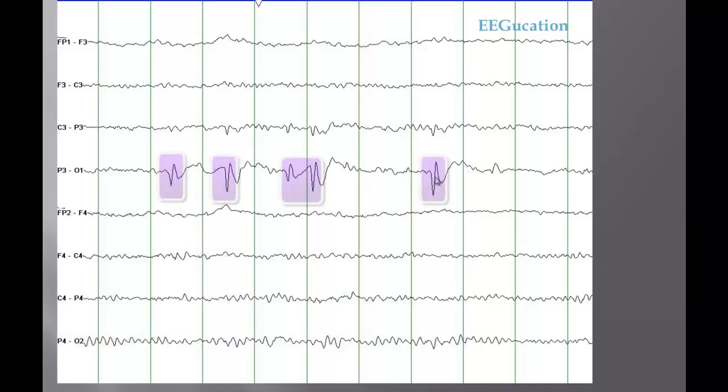But what is most striking are these epileptiform discharges in the occipital head region. These are negative, this is negativity at O1. If you change the montage or remontage it, you will see that the highest negativity is at O1. You also can note some slowing in the same area. This is a person with seizures coming from the occipital head region.